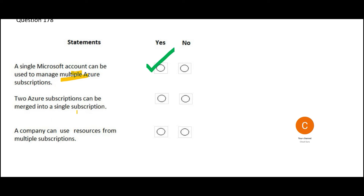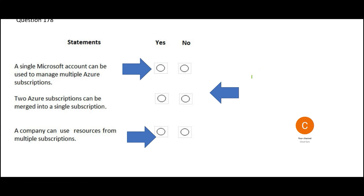The next part asks whether two Azure subscriptions can be merged into a single subscription — merging is not possible, so the answer is No. However, a company can use resources from multiple subscriptions — that is possible. For example, if you want to create an analytics report that cuts across finance and HR data sets, you can still access those data sets from databases in different subscriptions. In the real world, we keep doing this — for a data warehouse solution, you ingest data from finance, sales, HR, and IT systems across multiple subscriptions.